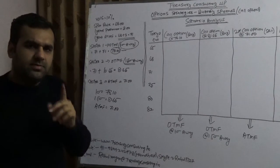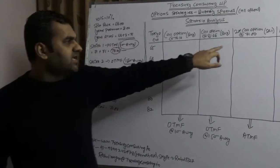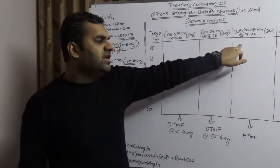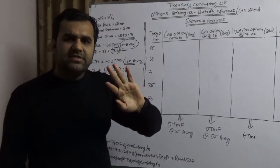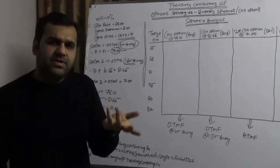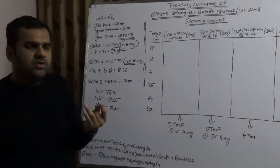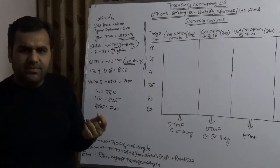The structure is not possible because here in the case of sell call he will receive premium, and he cannot receive premiums because as per the Reserve Bank, you cannot be a net recipient of the premium. So since you cannot be a net recipient of the premium, you will ask your bank to adjust your strike price.